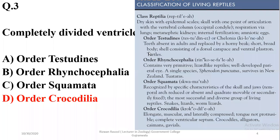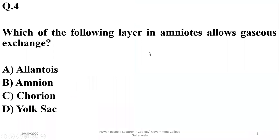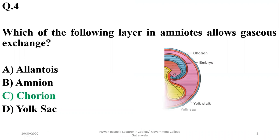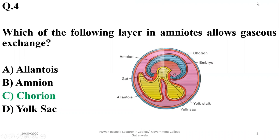Question number four: which layer in amniotes allows gaseous exchange? Gaseous exchange is a function of chorion, while amnion is a protective layer and allantois functions in waste storage. The correct option is chorion.